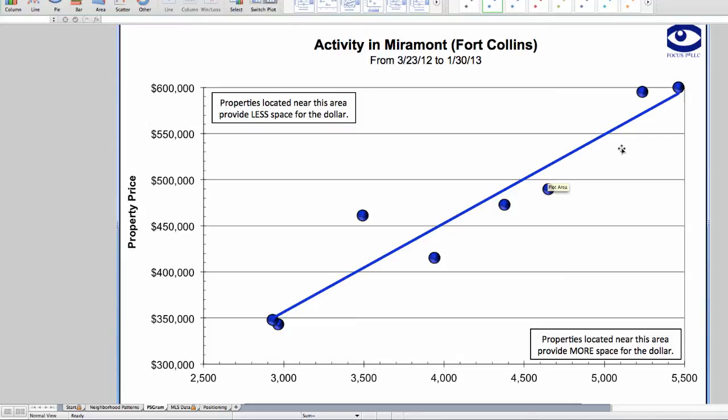When we price properties, we like to consider five factors: location, price and size of homes that have sold recently, and then special features and condition. You're able to see all five of these factors on one graph at one time. On this current graph, we can see the location. All these properties are in somewhat comparable location. They're all in the same subdivision or neighborhood. There still might be some nuances with the subdivision. For example, a property might back to a busy street or it might back to a greenbelt.